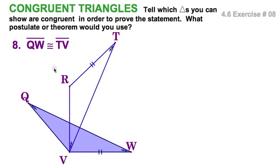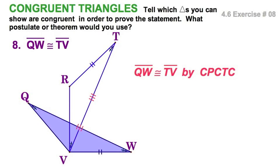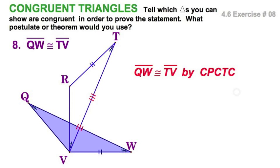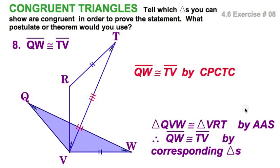They just keep getting easier. I see a pair of triangles that are already congruent. These two are going to be congruent by angle-angle-side. And once they're congruent, I can say that all their corresponding parts are congruent. So if I wrote it up, the two triangles are congruent by angle-angle-side, and therefore QW is congruent to TV by corresponding parts.